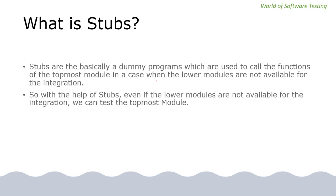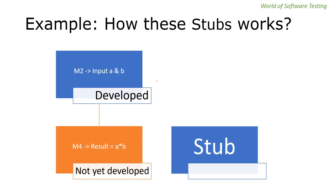With the help of stubs, even if the lower modules are not available for integration, we can test the topmost model. In this example, we have m2 as the top level model which is developed, and m4 as the lower level model which is not yet developed. We want to test m2, but since m4 is not yet developed, we use a stub in place of m4 to provide the result.